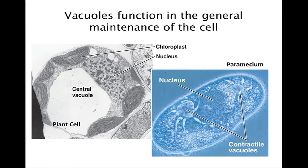Vacuoles are membranous sacs that have a variety of functions. In plant cells, a central vacuole — which has hydrolytic functions like a lysosome — helps the cell grow in size by absorbing water and enlarging. It can also store vital chemicals or waste products. Other vacuoles, such as the one found in a paramecium, is called a contractile vacuole, which is used for motility.